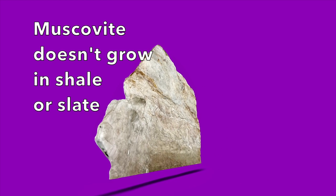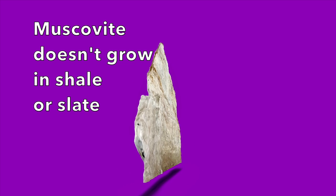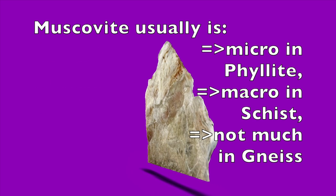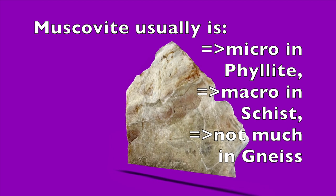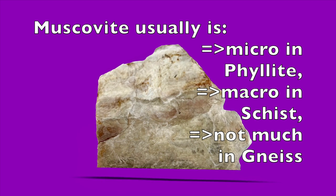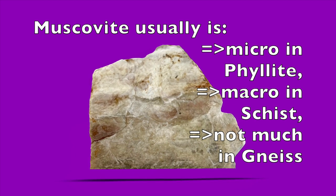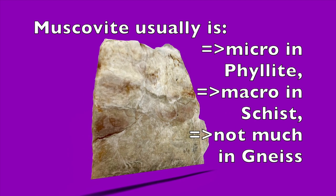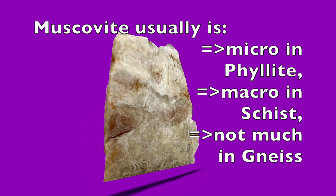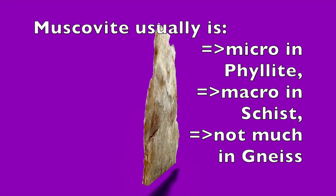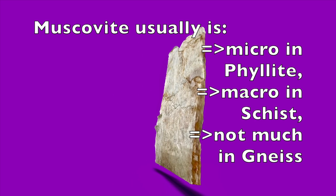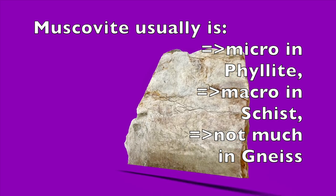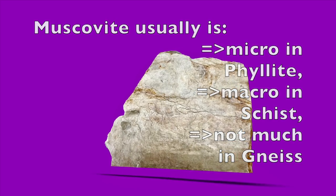Muscovite prefers almost medium to medium pressures and temperatures. As for phyllite, it marks the just right stage where muscovite begins to form microscopically. Muscovite also will form in schist, but in schist it is usually large enough to see individually. However, if the temperature becomes too high for schist, muscovite becomes unstable and disappears, and the rock turns into the rock called gneiss. Gneiss is spelled with a silent letter G.